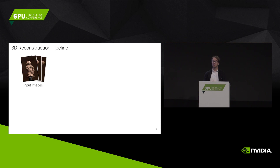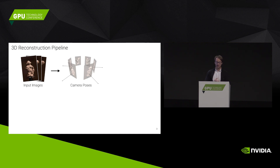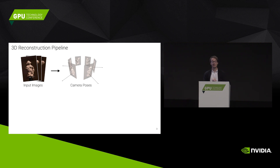So how does a typical 3D reconstruction pipeline look like? The input is a set of images, and the first thing typically done is estimating the camera poses. You try to match sparse features — you find a few sparse features in the images that correspond to each other. Then you solve what is called the bundle adjustment problem, which solves for the structure, the 3D point location, and the camera poses together. Out comes the camera locations as well as a very sparse 3D reconstruction.